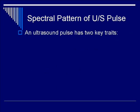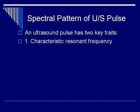The spectral pattern of an ultrasound pulse has two key characteristics. The first one is its resonant frequency, which is a characteristic of its piezoelectric element and configuration. The second element is the frequency bandwidth, which is a consequence of the pulse duration.